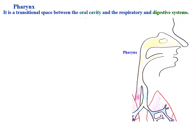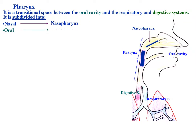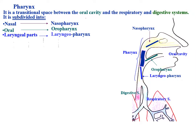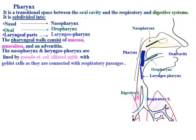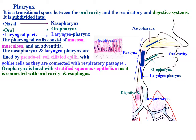The pharynx is a transitional space between the oral cavity and the respiratory and digestive systems. It is subdivided into the nasopharynx, oropharynx, and laryngopharynx. The pharyngeal walls consist of mucosa, musculosa, and adventitia. The nasopharynx and laryngopharynx are lined by pseudostratified columnar ciliated epithelium with goblet cells, as they are connected with the respiratory passages, while the oropharynx is lined with stratified squamous epithelium, as it is connected with the oral cavity and esophagus.